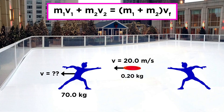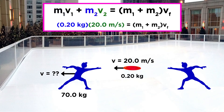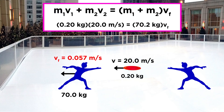So let's just plug in everything we know. Taking you to be object one, your initial velocity was zero, so we can just get rid of this term. The frisbee has a mass of 0.2 kilograms and was moving at a speed of twenty meters per second. Then over here, we can add the two masses to get 70.2 kilograms, and then solve for the final velocity. That gives us 0.057 meters per second.